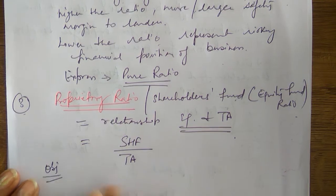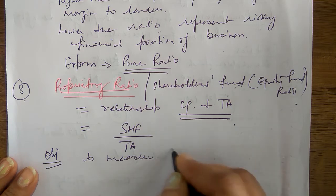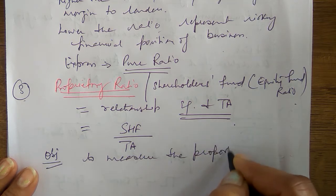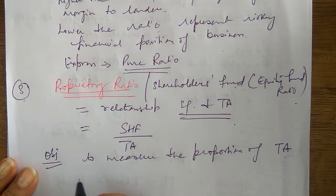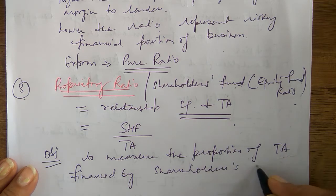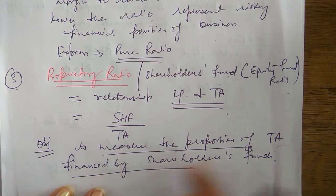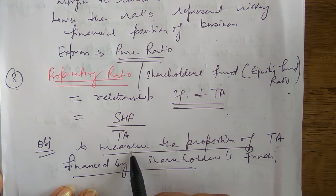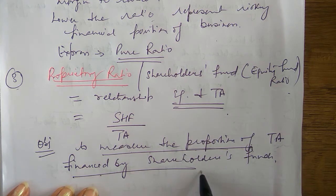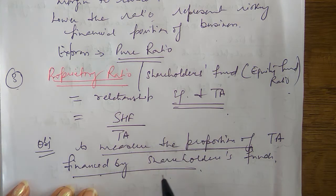The objective of calculating the shareholders fund ratio is to measure the proportion of total assets financed by shareholders funds. Just as above we saw total assets financed by long-term debt, here we measure total assets financed by shareholders fund.